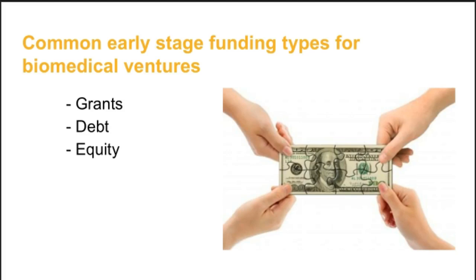To reduce the risk for lenders, debt can be secured or collateralized, meaning the borrower agrees to forfeit some other asset of value to the lender if they do not pay the loan — also referred to as default. While it is generally preferable for existing shareholders of an early-stage biomedical venture to use debt to capitalize the business instead of equity, few lenders are willing to loan money to unproven businesses with little or no revenue. Therefore, founders often turn to equity investors to capitalize their early-stage ventures. Equity is a stock or any other security representing an ownership interest, and most early-stage biomedical ventures are private companies capitalized by private sources.